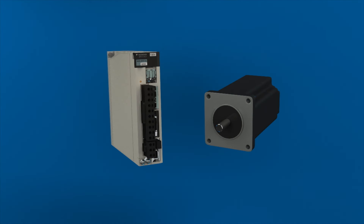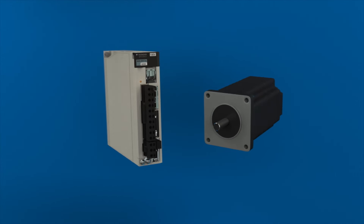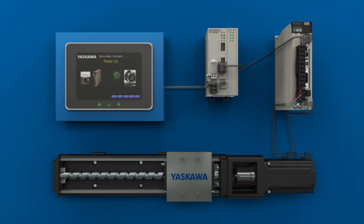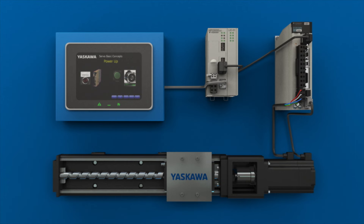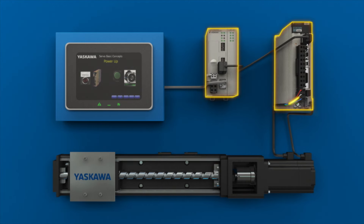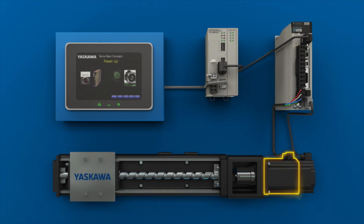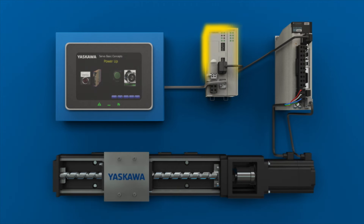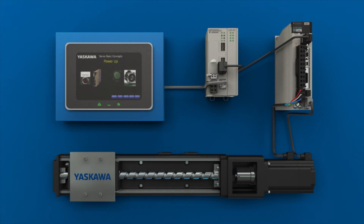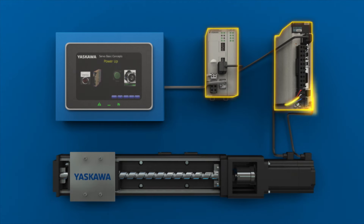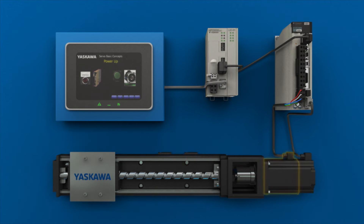Now we have some insight on what a servo is, but we haven't yet described how a servo gets things done. We put a servo to work by making it part of a motion control system. At the input to the servo amplifier is a controller. The controller provides the commands that dictate when and how the servo motor will move. The controller sends commands to the amplifier in the form of an analog signal or data, and the controller and amplifier also exchange position feedback from the encoder.